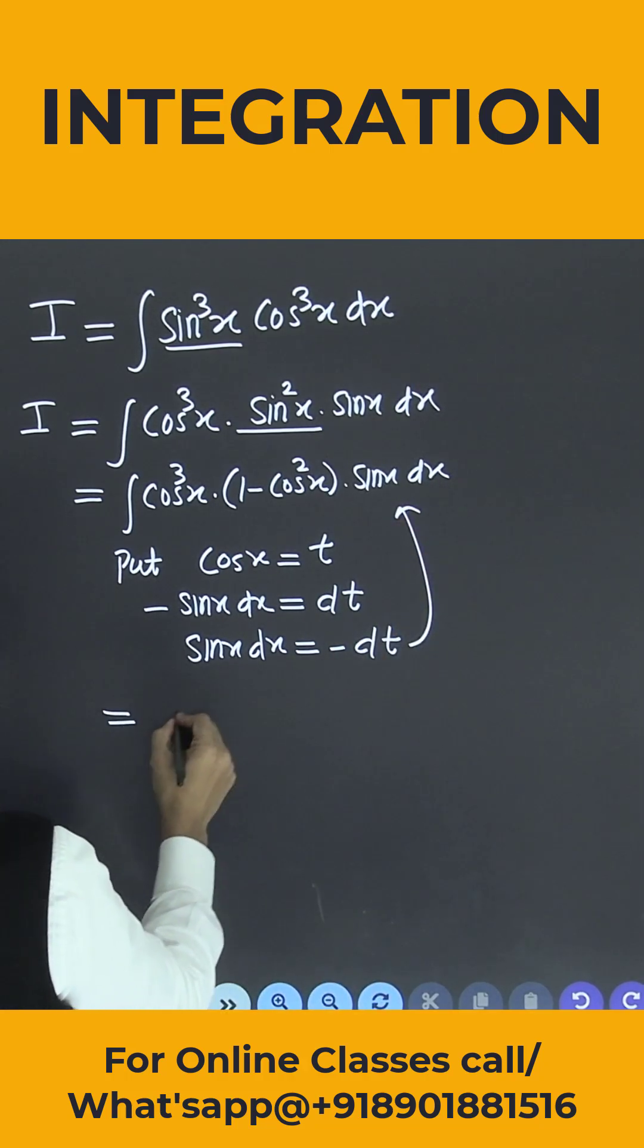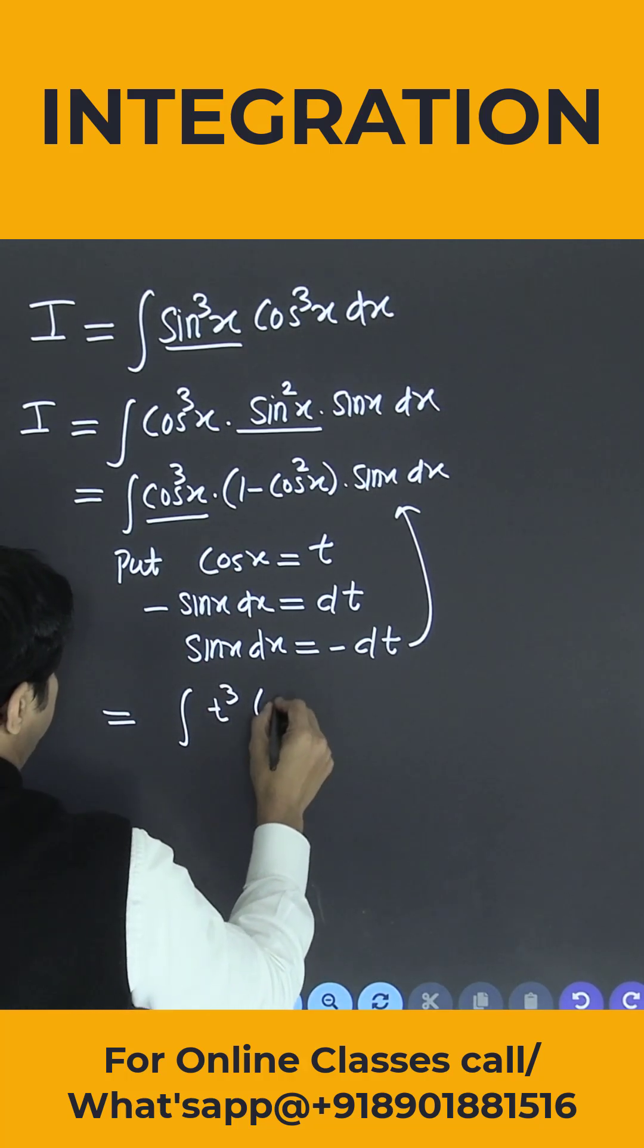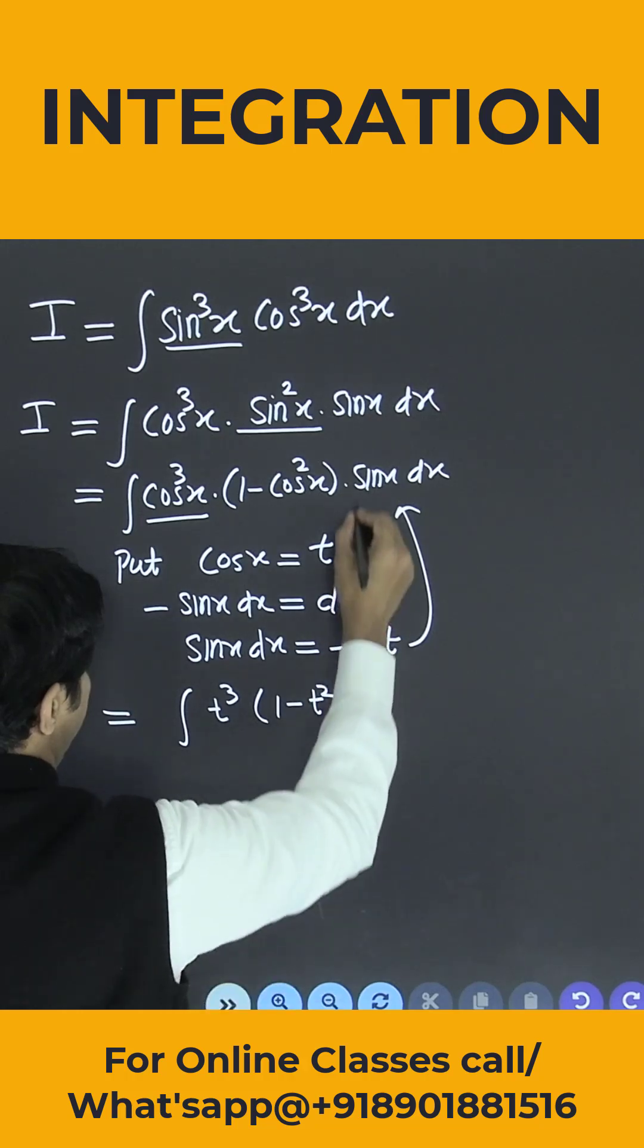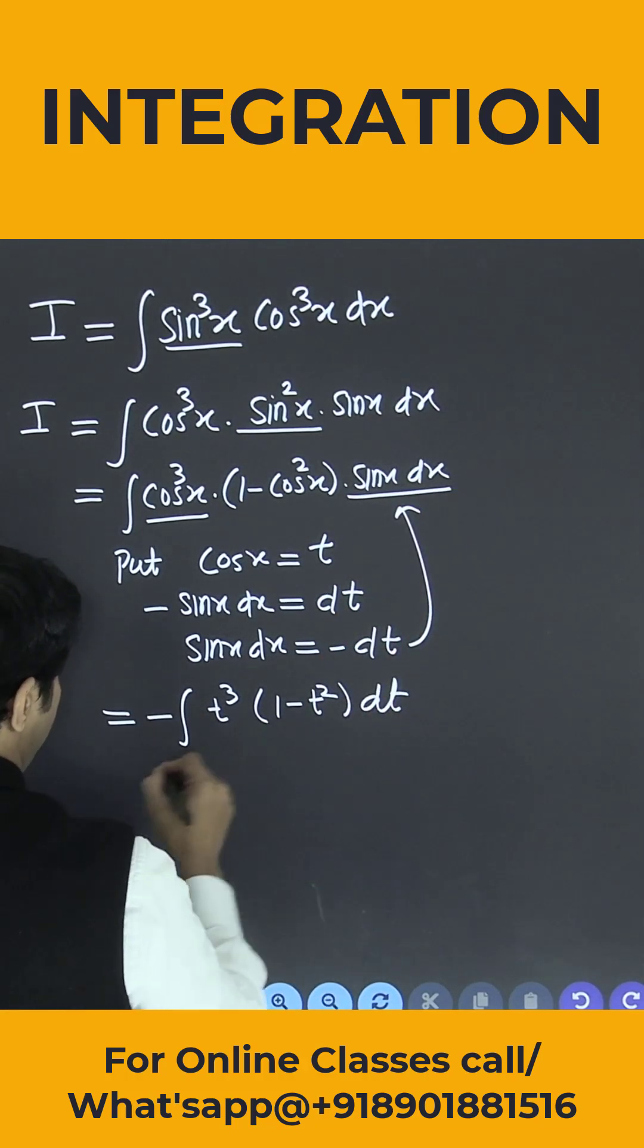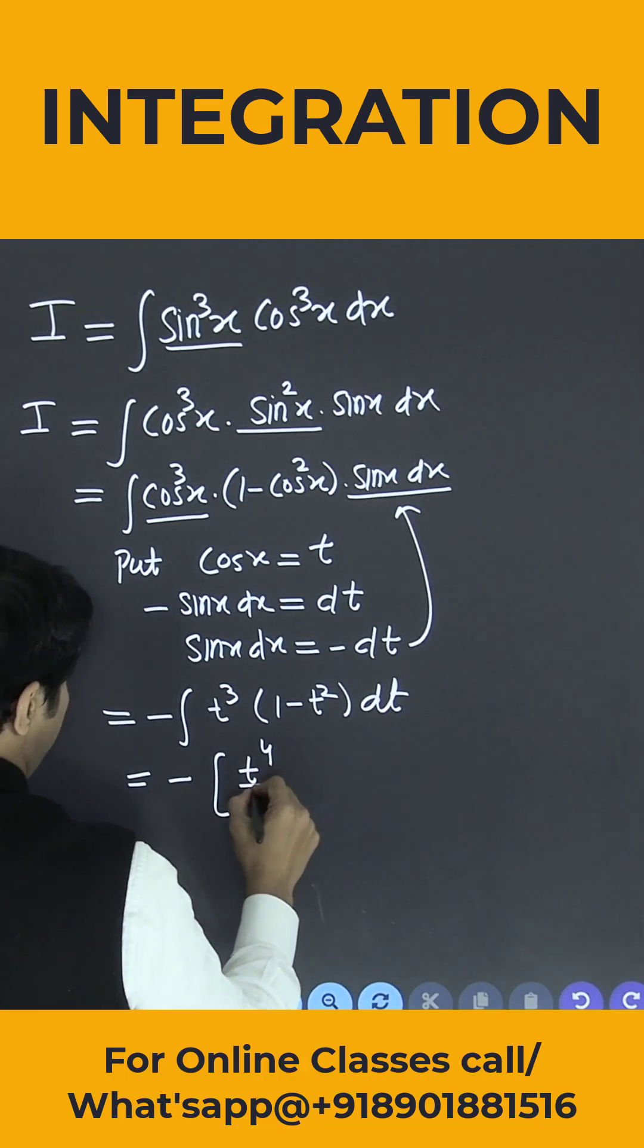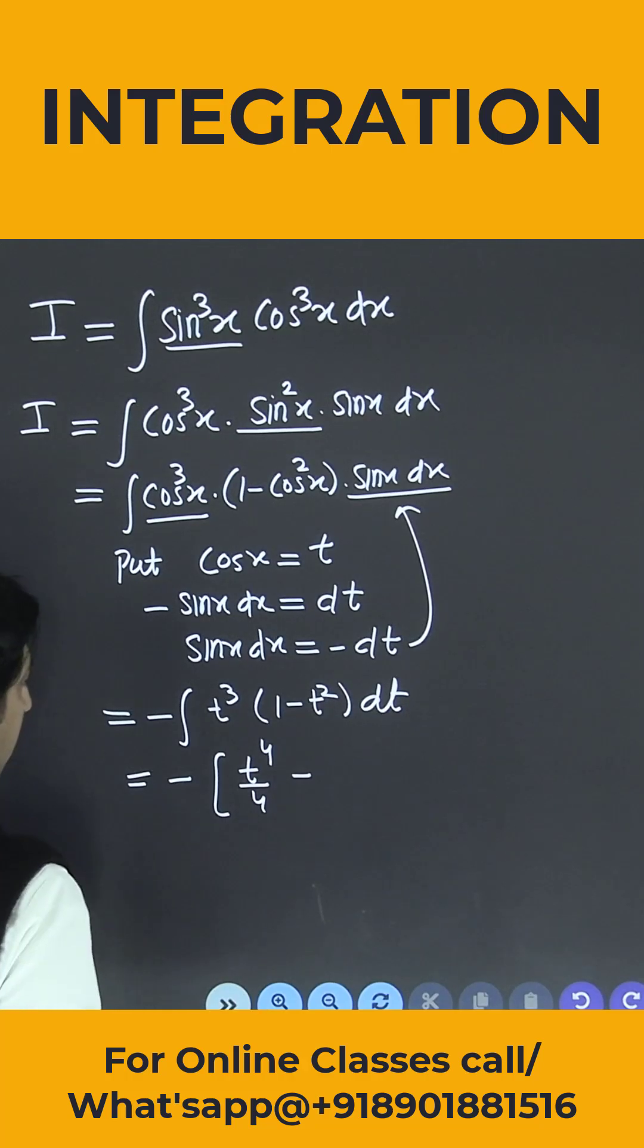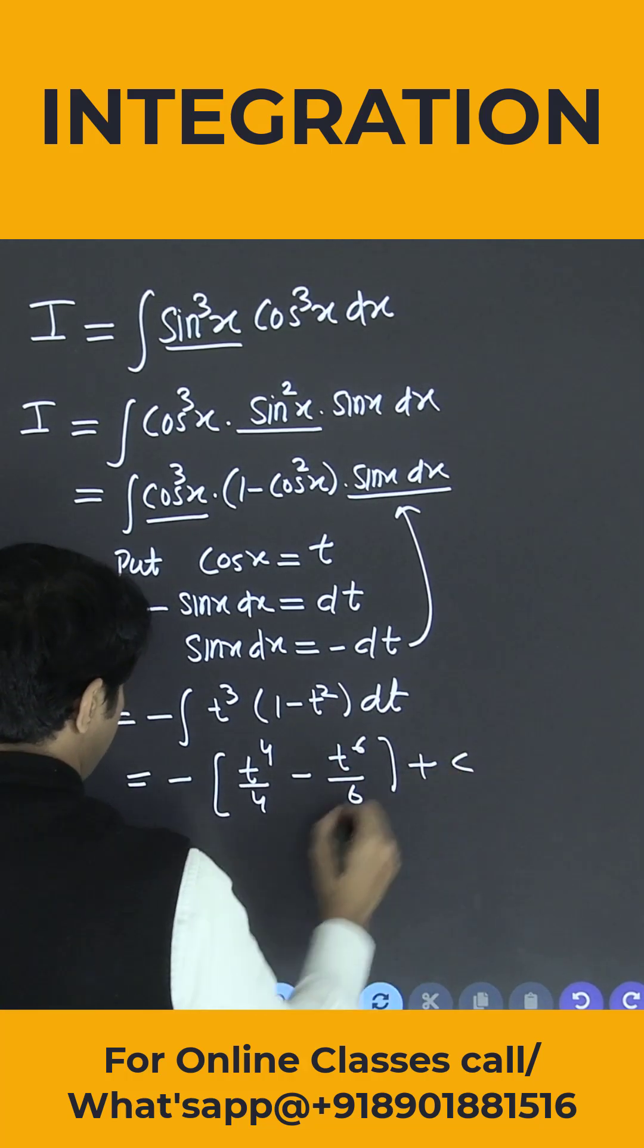Put in the above integral so that this is integration. Cos cube x is nothing but t to the power 3, 1 minus t square sin x into dx is nothing but minus dt. So minus sign is outside. This is nothing but t to the power 4 by 4 minus t to the power 6 by 6 plus c is the answer.